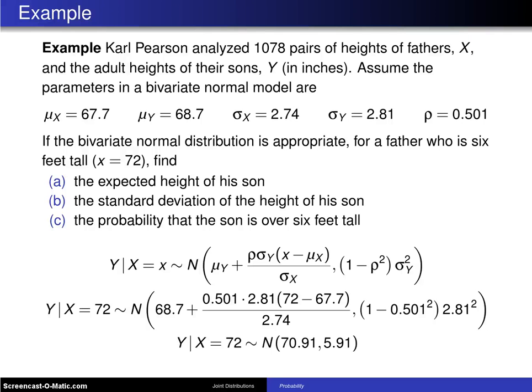Here's an example that involves the bivariate normal distribution. Carl Pearson was one of the early pioneers in statistics and he analyzed 1078 pairs of heights of fathers, that's the random variable X, and the adult heights of their sons, which is Y, measured in inches.